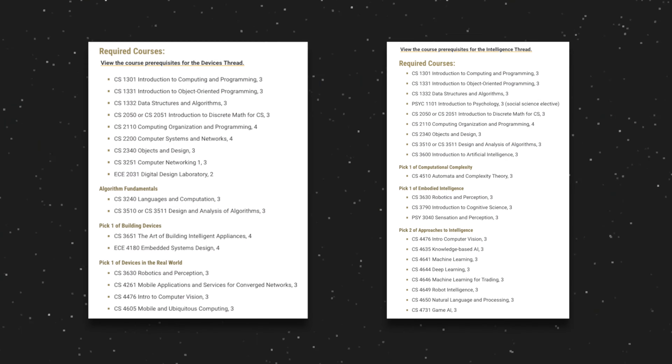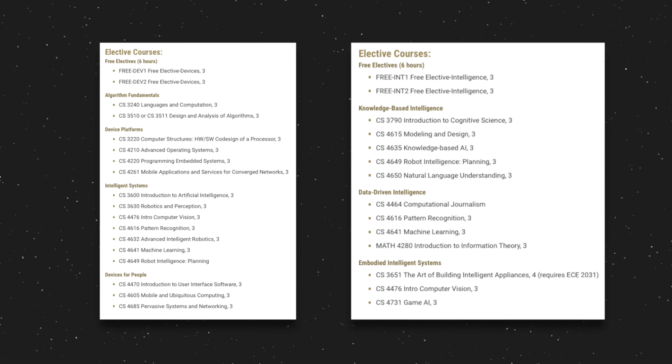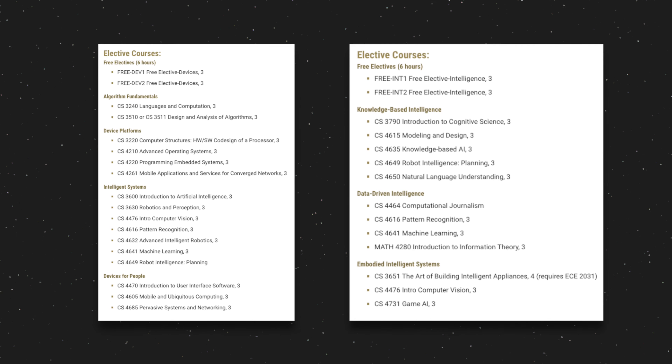You should be able to find curriculum information available online for pretty much any college you're considering. I definitely recommend taking a look at that and seeing which courses you have to take and which different specializations are available, if any. That can give you a good idea if there are a lot of really exciting courses you're eager to get to in your later years — or if the degree is very one-size-fits-all with a lot of basic classes about things you don't really care about, maybe that won't be the best program for you.